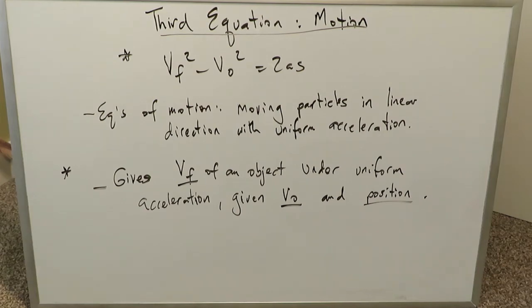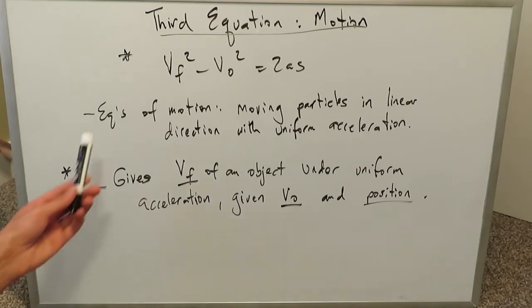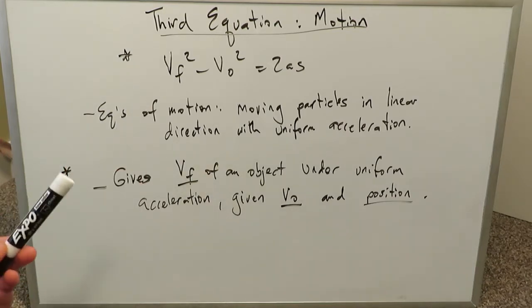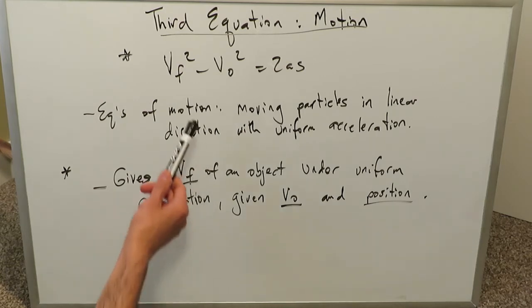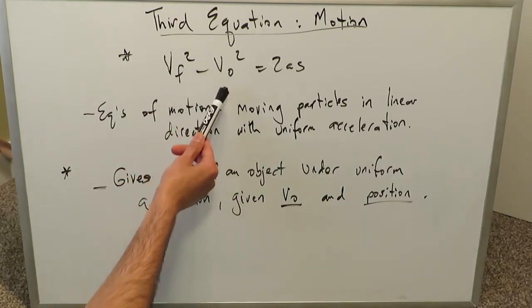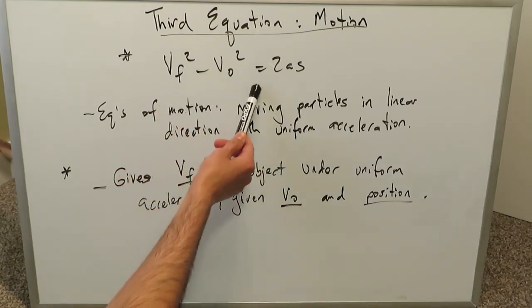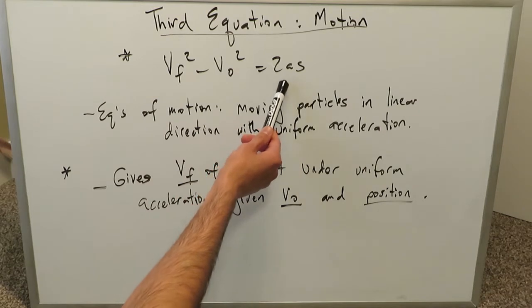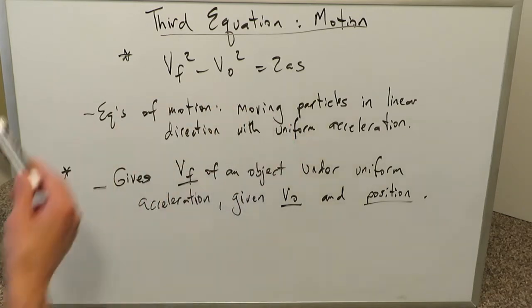Good evening everyone. You are joining me for this third equation of motion video. I am Mr. Ish and I have the equation presented here: Vf squared minus v squared equals 2as — the final velocity squared minus initial velocity squared equals 2 times acceleration times the position.